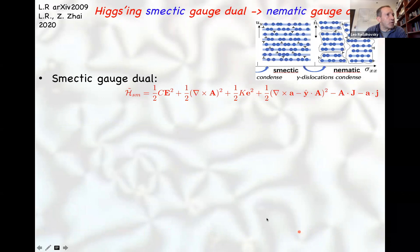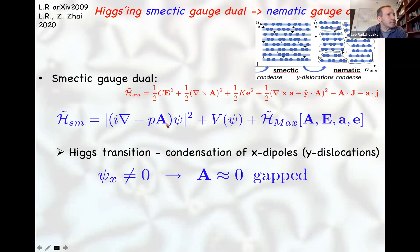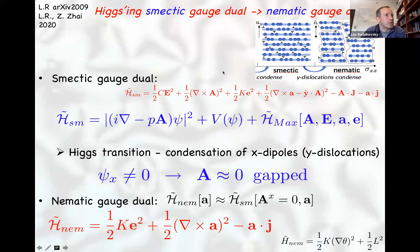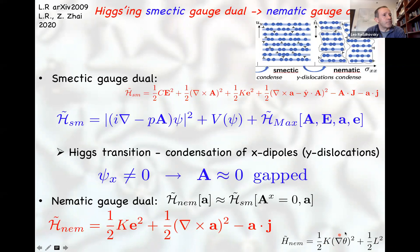In the smectic theory, going to the nematic means Higgssing out the A sub X gauge field by condensing x-dipoles. When those condense, A sub X becomes gapped and can be integrated out. What is left is just the little e and little a sector — which is the conventional vector gauge theory you would get by dualizing the nematic phase, corresponding to the remaining rotor degree of freedom of the orientational order of the nematic.